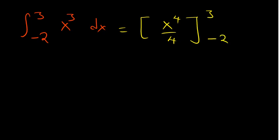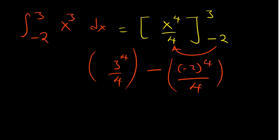For the first part, use the upper limit, which is 3: 3⁴/4. Then minus the lower limit, which is negative 2: (-2)⁴/4. As simple as that. If you simplify, you get the answer.